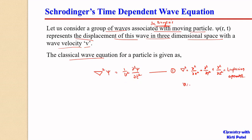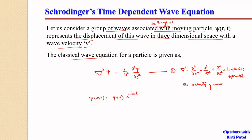Here, v is the velocity of the wave. From this classical wave equation, we previously found a time-independent solution. A similar solution we get here also. That is, ψ(r,t) = ψ(r) · e^(−iωt). Let this be our equation number 2.